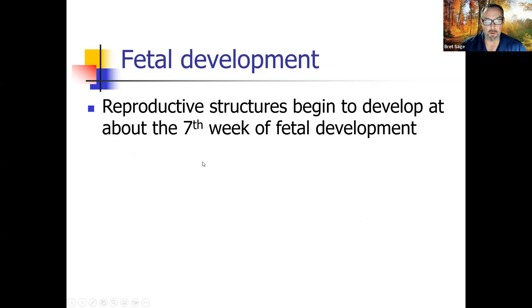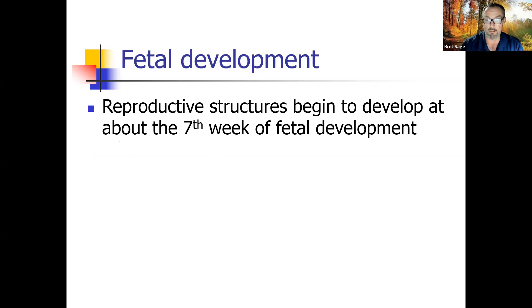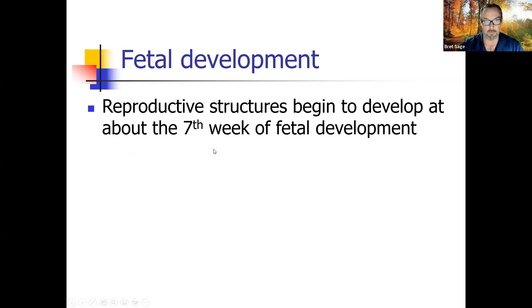Fetal development: reproductive structures begin to develop at about the seventh week of fetal development. When a baby is inside the mom, their reproductive structures start to develop inside the mom.